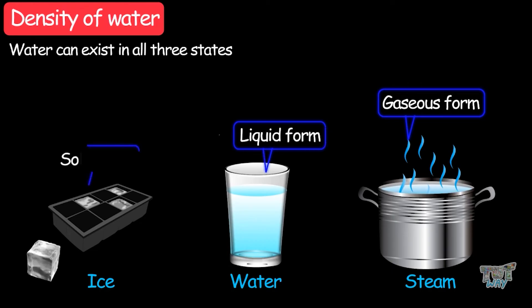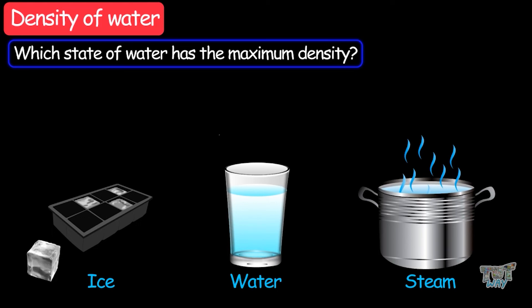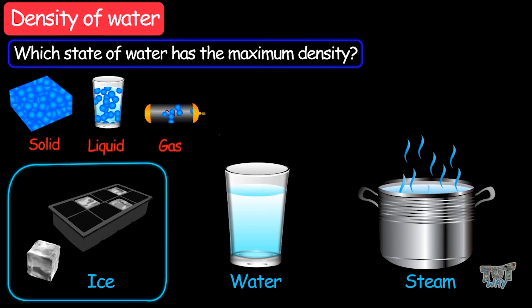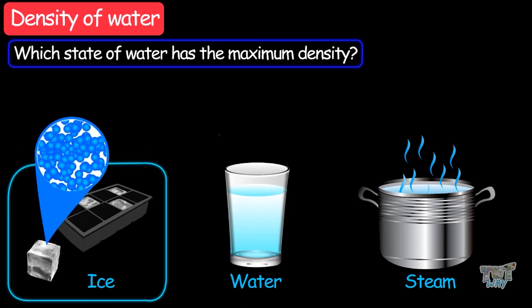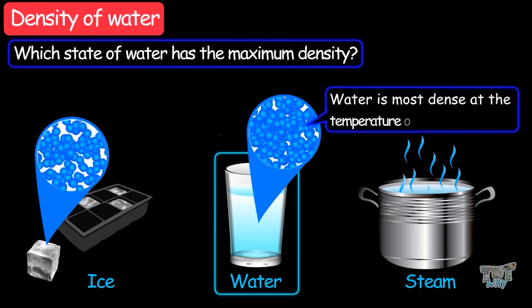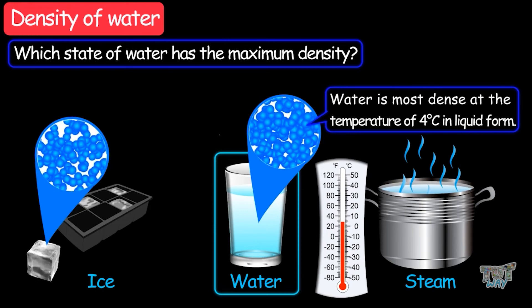The obvious answer should be ice, because ice is the solid form of water and solids have the maximum density. But this is not true in the case of water. Ice is not the densest form of water — ice is actually less dense than the liquid form of water. Water is the most dense at the temperature of 4 degrees Celsius in the liquid form. Now let's learn the science behind it.